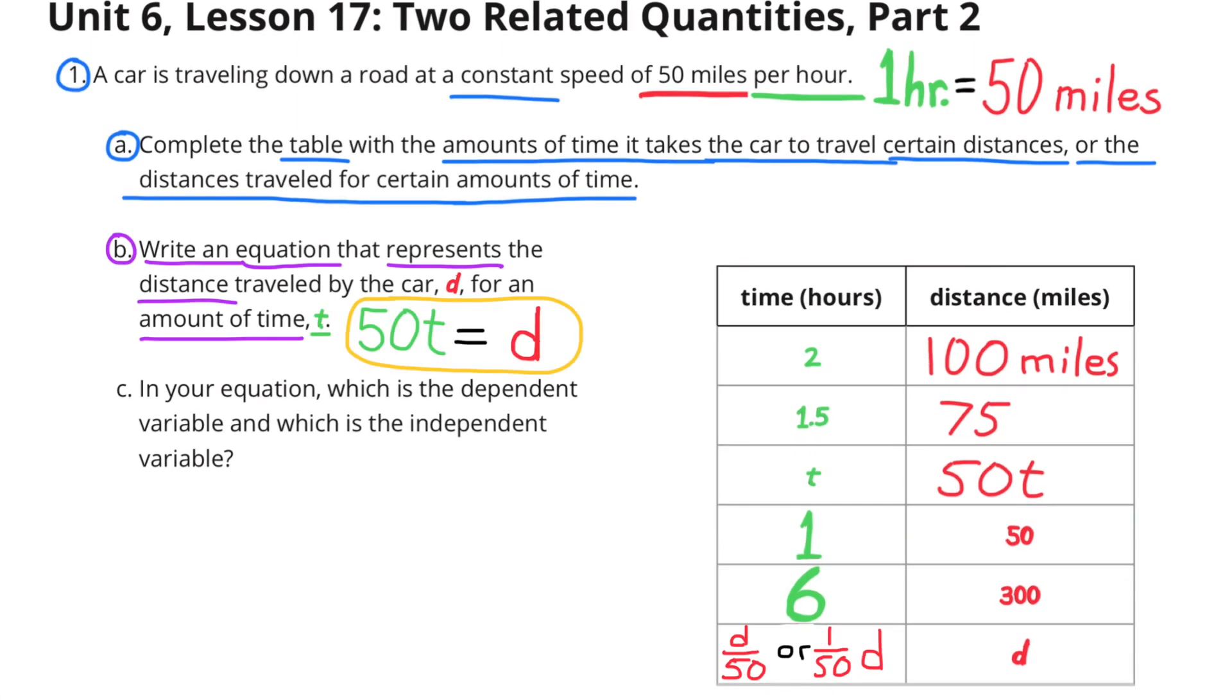Part B. Write an equation that represents the distance traveled by the car, D, for an amount of time, T. 50 times T equals D, or 50T equals D. You can also write it D equals 50T.